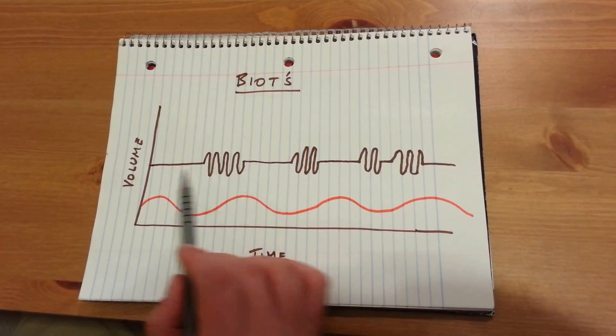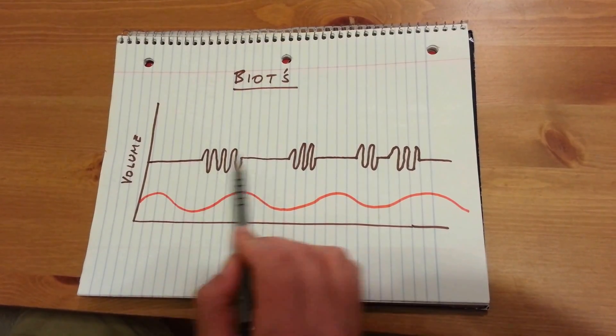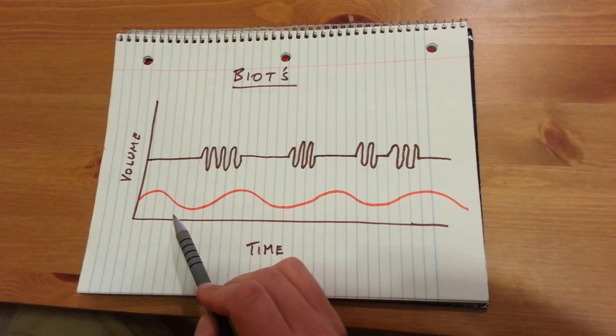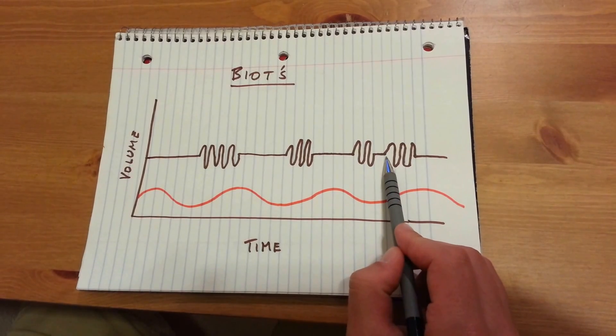This apnea can be regular, meaning it occurs in the same time intervals each time, or irregular, meaning that each interval is of different length.